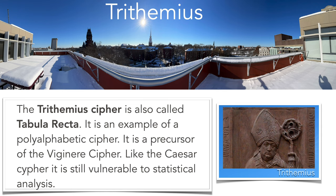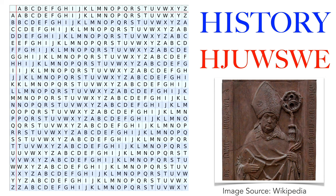A bit better is the Trithemius cipher. Since the alphabet shifts after each letter, frequency analysis appears to be broken, though it's still possible by using a linear subset of the text. For example, the first letter H becomes H, the second letter I becomes J using the second alphabet, the third letter S becomes U, and so on — each time using an alphabet shifted by one.